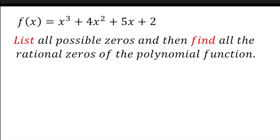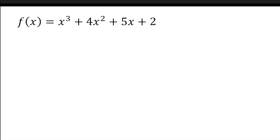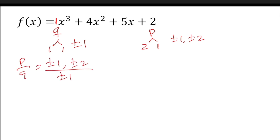Let's work on number 2. The question is: list the possible zeros and find all the rational zeros. For P over Q: there's no leading coefficient number, so you have a 1. Factors of 2 are 2×1, and factors of Q are 1×1. So possible zeros are ±1 and ±2, divided by ±1. Since we're dividing by 1, the possible zeros are ±1 and ±2.